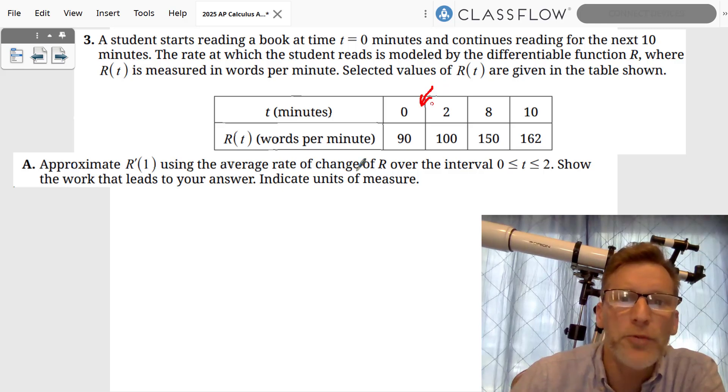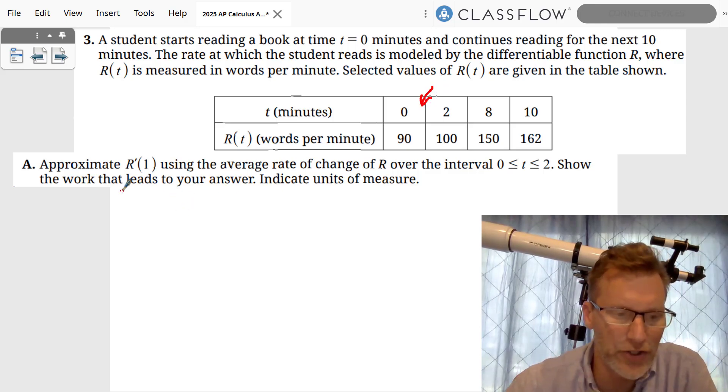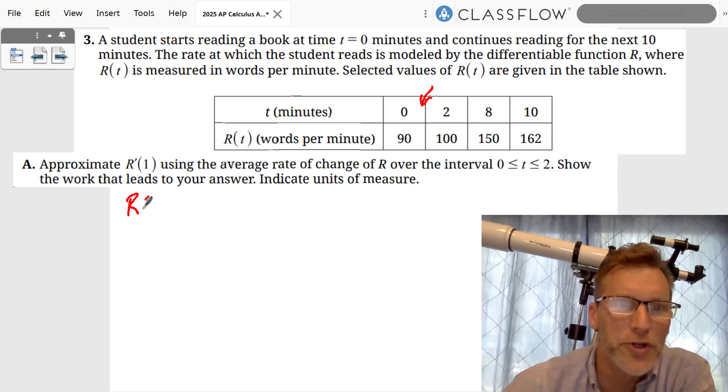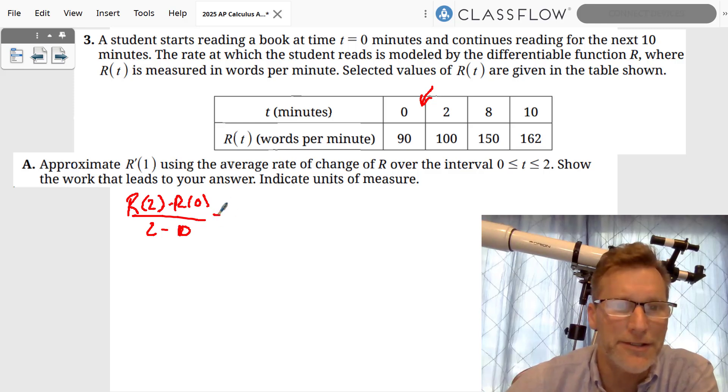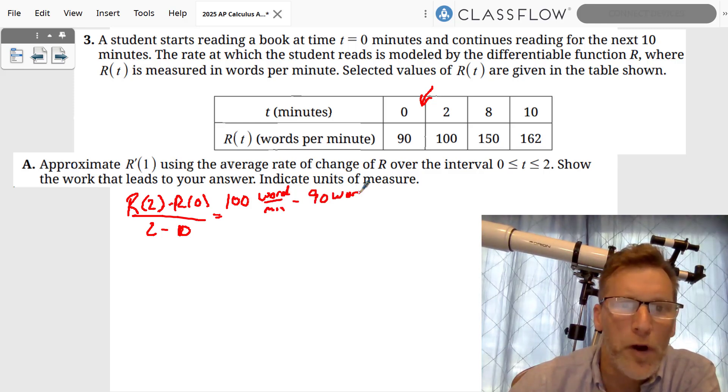r prime of 1, which is right between 0 and 2. So what do we want to do? We want to do r of 2 minus r of 0 over 2 minus 0. Okay, yes, that is a 0, and we have 100.